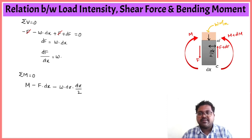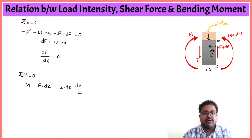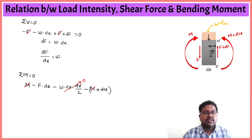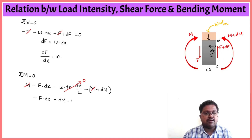Then we have moment M plus dM acting on face CD from the left-hand side in the anti-clockwise direction, which gives minus M plus dM. Setting the total equal to zero: M and minus M cancel. Since dx is very small, the dx squared term is neglected, leaving minus F dx minus dM equal to zero.